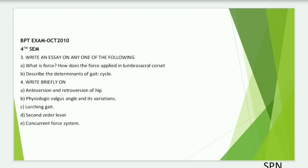Essay questions include: what is force and how is force applied in the lumbosacral corset? What are the determinants of the gait cycle? Describe it in detail. Short questions: anteversion and retroversion of the hip, physiological valgus angle and its variations, latching gait, second-order levers.